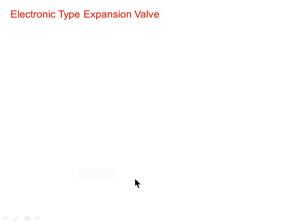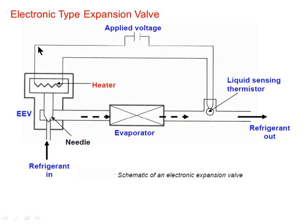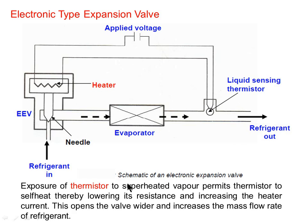Next is the electronic type of expansion valve. The diagram shows the refrigerant inlet, needle, electronic expansion valve, heater, liquid sensing thermistor, evaporator, and refrigerant outlet. Exposure of the thermistor to superheated vapor permits the thermistor to self-heat, thereby lowering its resistance and increasing the heater current. This opens the valve wider and increases the mass flow rate of refrigerant. In this way, the flow through the electronic expansion valve is maintained.